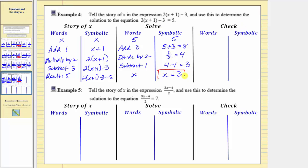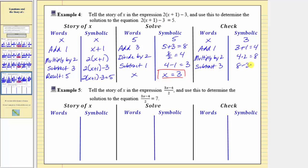In this last column, we'll check our solution. To do this, we'll rewrite the story of x replacing x with three. Beginning with x, we now know x is three. Next step, we add one: three plus one equals four. Next, we multiply by two: four times two equals eight. Next, we subtract three: eight minus three equals five. And notice how we want the result to be five — which is good news — because when x equals three, the result is five, verifying our solution.